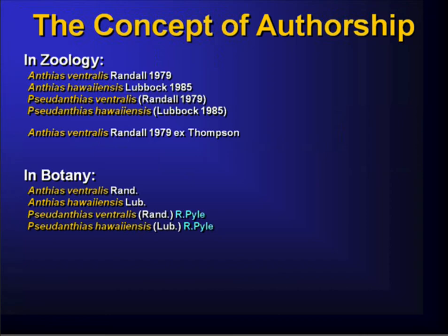There's also a quirky thing occasionally used in taxonomy: the ex-author designator. This means that Randall, 1979 published the name ventralis, but based it on the intellectual work of Thompson. Botanists have the same notion except, conveniently, they reverse the order of the authors around the 'ex.' Both formulations mean exactly the same thing — Randall established the name through the work of Thompson — but it's one more of those little things that really annoys people trying to write parsing algorithms.